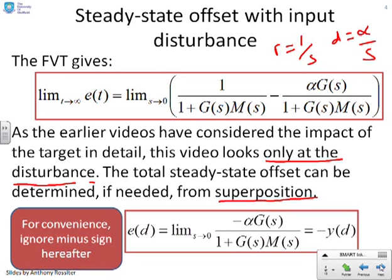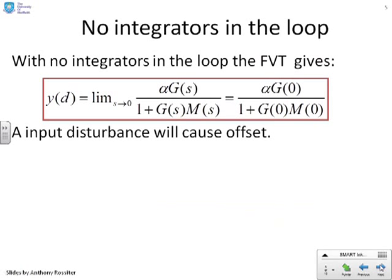But all we're going to use is this part here. So, I've written E of D to show you that what I'm really saying is which part of the error depends on the disturbance signal D. And for that, you get the formula, the limit as S goes to 0 of minus alpha G over 1 plus G of S M of S. And you note here, this gives you minus Y of D, minus the impact on the output. So, what we're going to do hereafter is we're going to ignore this minus and this minus and just assume that this signal is giving us the impact on the output, which is equivalent to the offset in magnitude anyway.